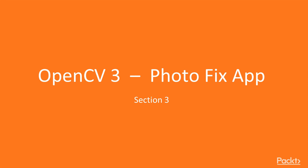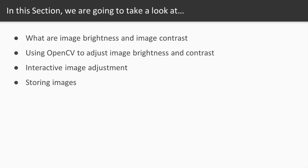We're now ready to start manipulating images with our PhotoFix app. In this section, we'll implement one of the most basic image manipulation operations: adjusting image brightness and contrast. We'll learn what brightness and contrast are, then see how these operations can be implemented in OpenCV and create an interactive app to adjust brightness and contrast. Finally, we'll save our results to a file.